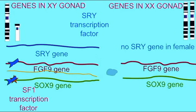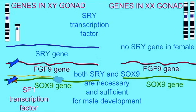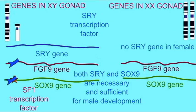It is the activity of the SOX9 gene which will continue the differentiation of cells into male-specific cells, and SRY therefore activates SOX9. Both SRY and SOX9 are necessary for male development, and both are sufficient for male development.